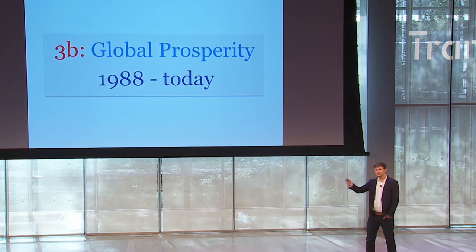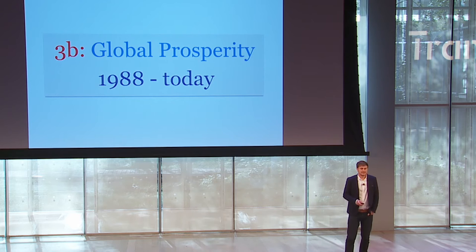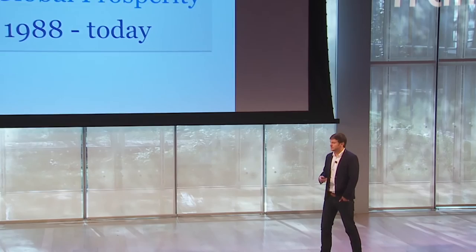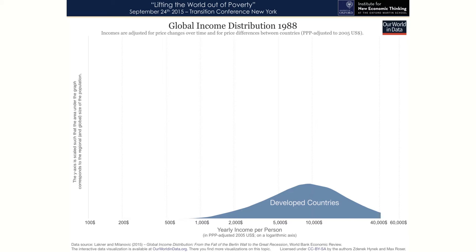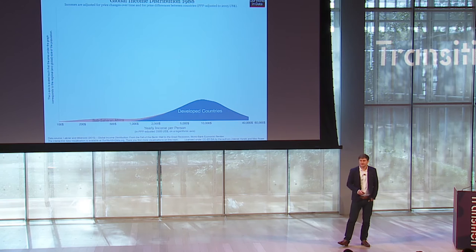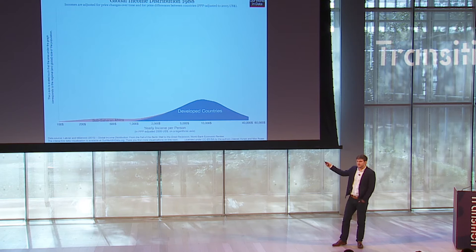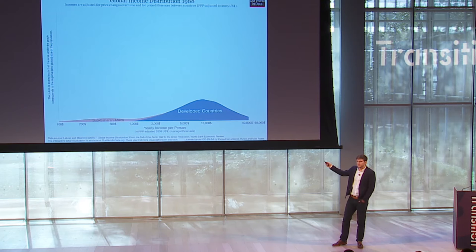Now we make a huge jump to 1988, where we have much better income data. Looking at the income distribution 168 years later — $100 on the very left, $60,000 on the very right — back in 1988 the average income in the developed countries is around $9,000, with a very long right-hand tail of people much richer than that. If you add Sub-Saharan Africa, you see it lies to the very left, with almost no overlap between Sub-Saharan Africa and the developed countries — meaning the richest people in Sub-Saharan Africa back then are as poor as the poorest people in the developed countries.